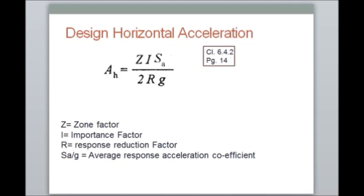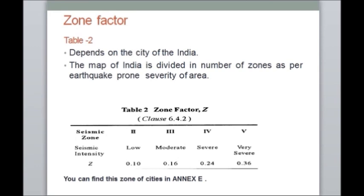Zone factor Z depends on the city in India. The map of India is divided into zones as per the earthquake-prone severity of the area. You can find it in Clause 6.4.2, Table 2, and you can also find the zone of cities in Annexure E. As shown in Table 2, if a city falls in severity level 2, the seismic intensity is low and the zone factor Z is 0.10; if it falls in very severe intensity, the zone number is 5 and the zone factor is 0.36.